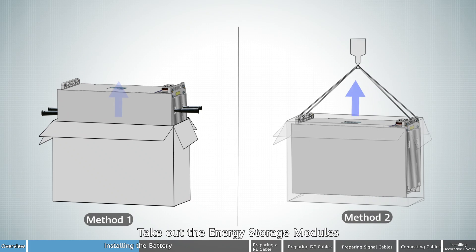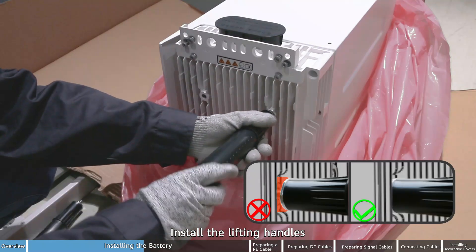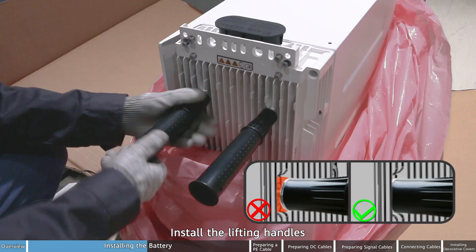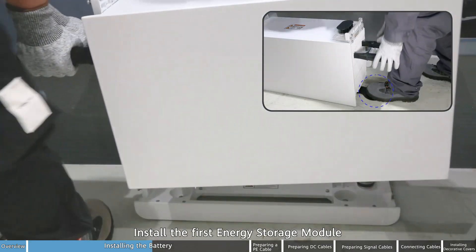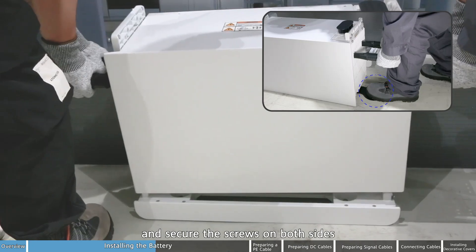Take out the energy storage modules. Install the lifting handles. Install the first energy storage module and secure the screws on both sides.